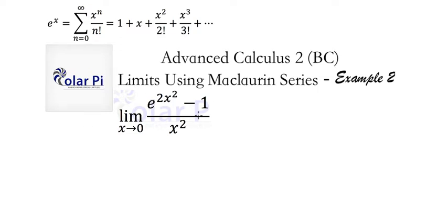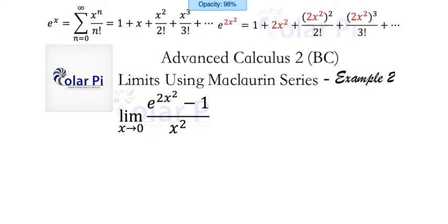All right, so to get to the Maclaurin series for this whole quotient, we need to first find the Maclaurin series for e to the 2x squared. And we can get there by simply modifying the Maclaurin series for e to the x, where we replace all of the x's with 2x squared. And you can see that I've done that in red, and at least the first four terms that I've displayed, right? And dot, dot, dot, use your imagination.